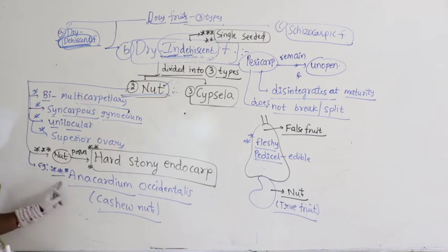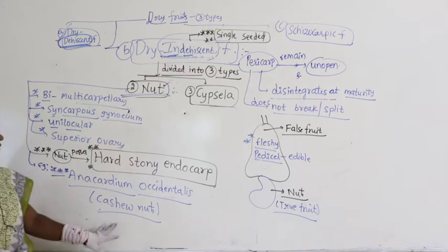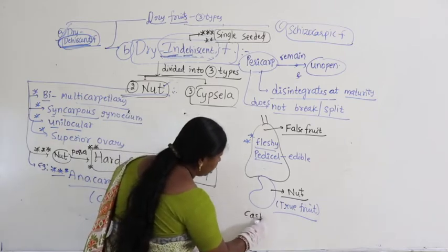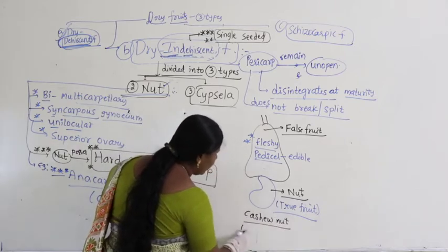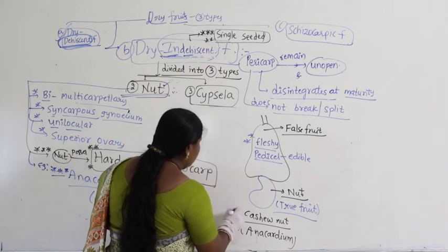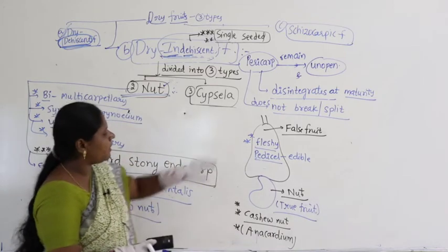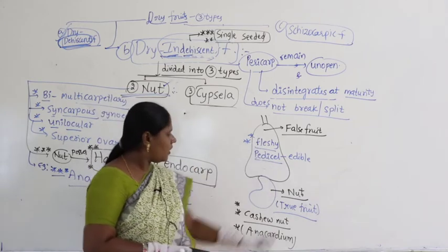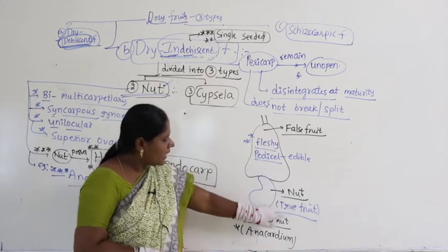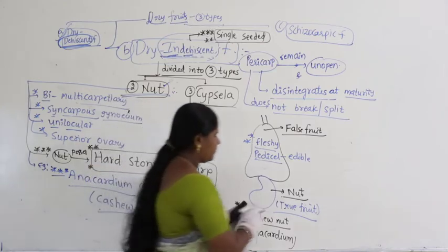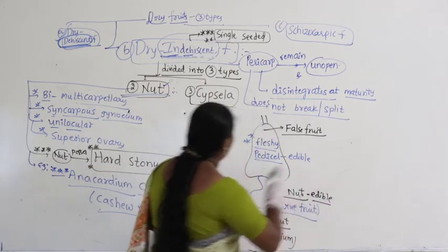Where do you find Anacardium occidentale? That is the cashew nut, its common name. If you look at the cashew nut, the upper part is false fruit — fleshy pedicle is there, this is edible — and the down part is the nut, which contains the true fruit. So here, pedicle is edible and nut is also edible.